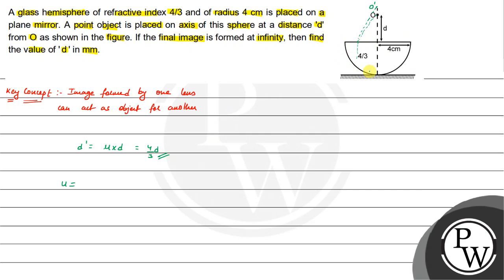We have to see how much distance the ray travels in the curved surface. So we will write u minus d dash plus r. This is d distance which is d dash distance. So u is minus of 4 by 3d plus r.